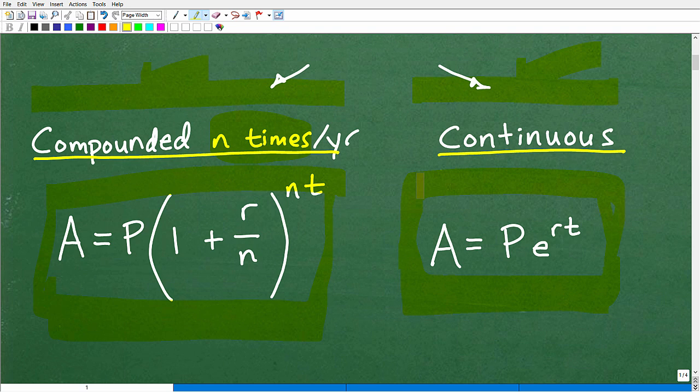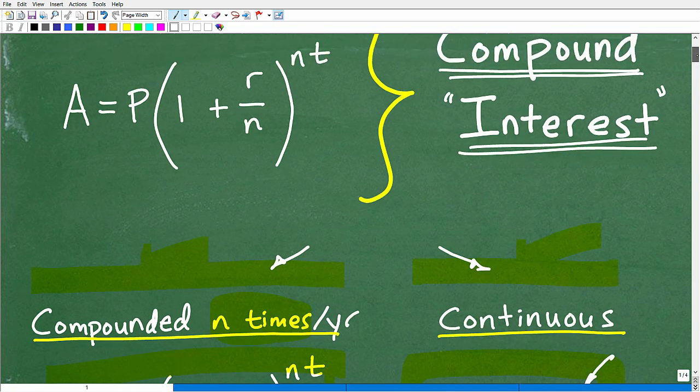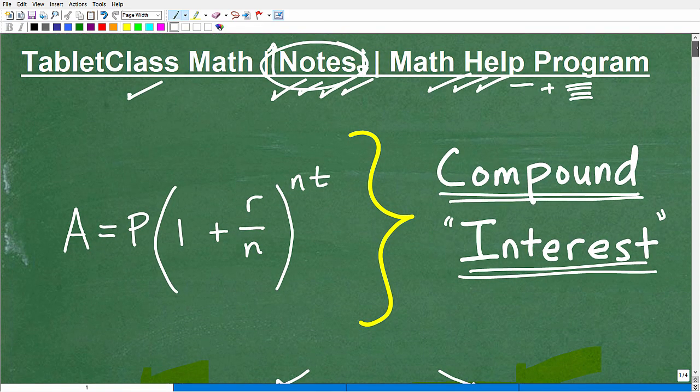You can get into more sophisticated problems. I can ask you, a particular investment grew to this at this particular rate. How long was that invested for? Now we're looking at solving an exponential equation, which is going to require natural logarithms. You can keep messing with this and get into more sophisticated problems.